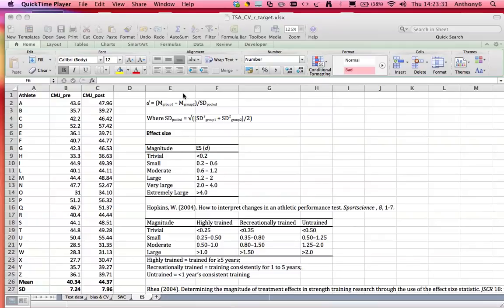So the effect size is calculated as the change in group means divided by the pooled standard deviation, and the pooled standard deviation is calculated as follows.